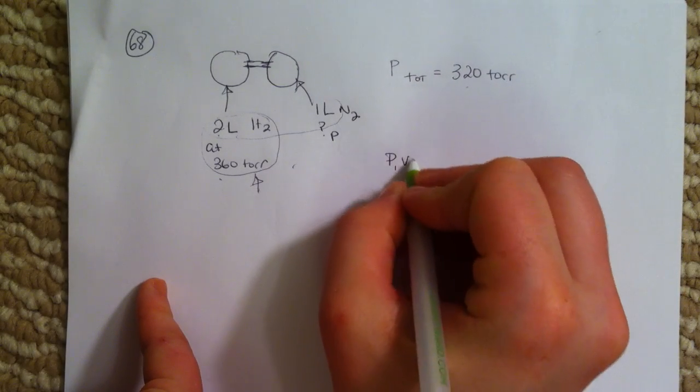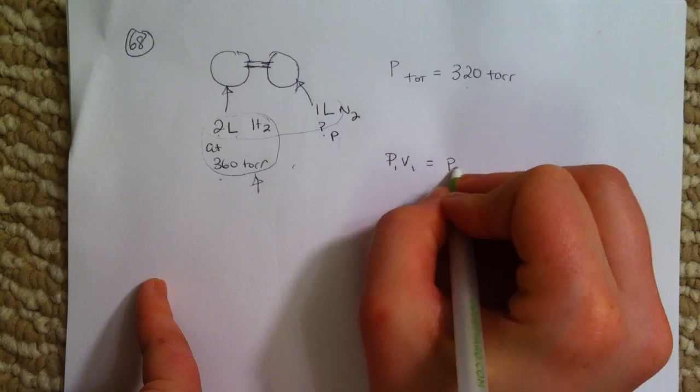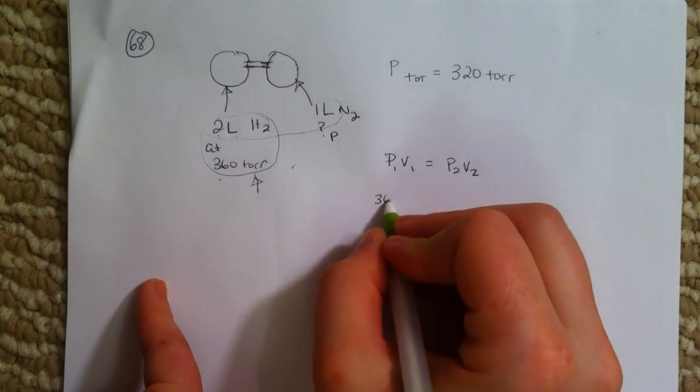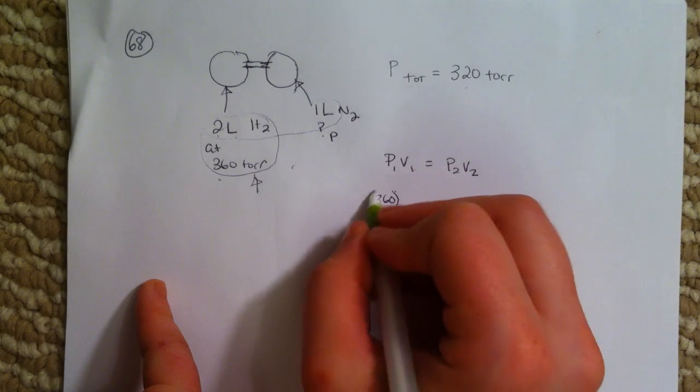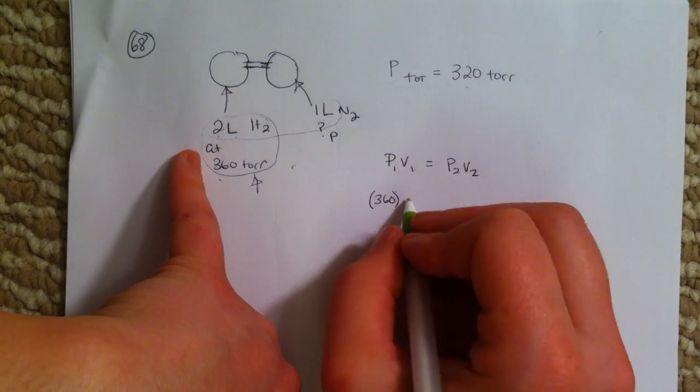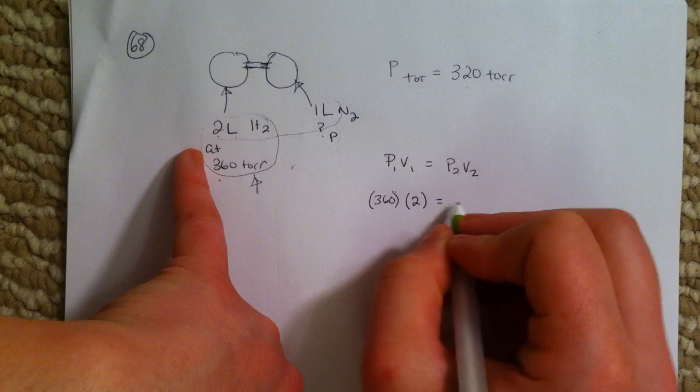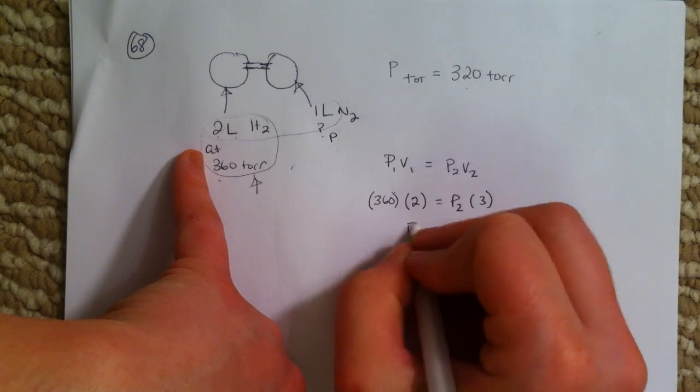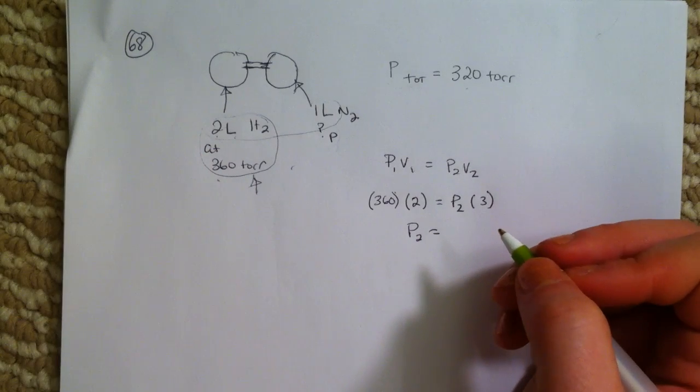So we know P1V1 equals P2V2, and my initial P is 360, and my initial V is 2 liters, and my P2 I don't know, and I'm now going to 3 liters. So P2, when you solve that,